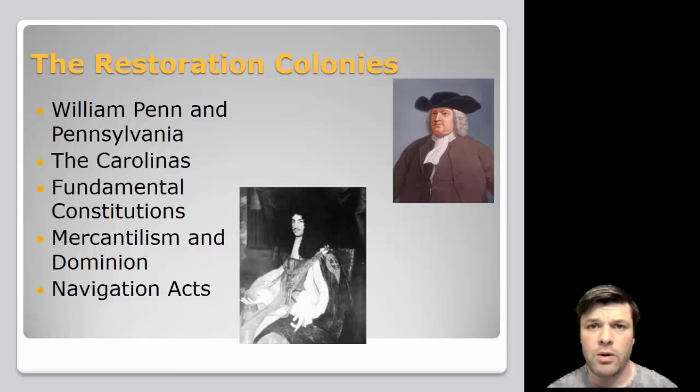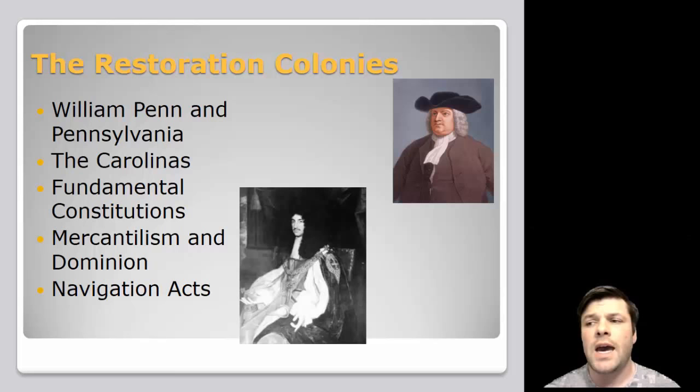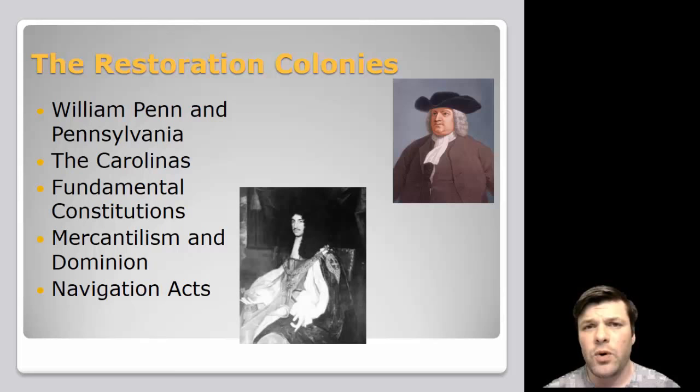Maybe there'd be better luck in what would come to be known as the Carolinas. The Carolinas were governed by this concept of the fundamental constitutions. Through the fundamental constitutions, what the king did was establish a couple dozen landlords and pretty much put them in charge — think of this almost like a mafia boss. You can do what you want, but ultimately you answer to me. And that's exactly what these landlords would do, including recruit a labor force.